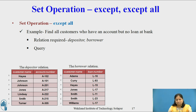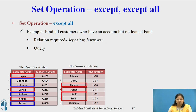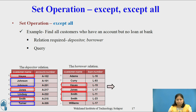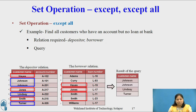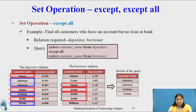Consider the example of Except All operator: Find all customers who have an account but no loan at the bank. In the Depositor relation, 2 tuples for Johnson, 1 tuple for Lindsay and Turner shown in the blue box are in Depositor but not in Borrower. The Except All operator considers both tuples for Johnson as max of 0 and 2 accounts minus 0 loans equals 2. Hence there will be 4 tuples in the result. The query is: SELECT CUSTOMER_NAME FROM DEPOSITOR EXCEPT ALL SELECT CUSTOMER_NAME FROM BORROWER.